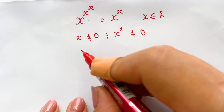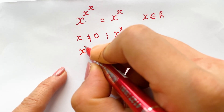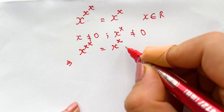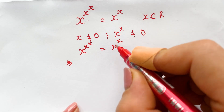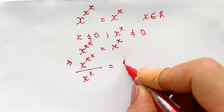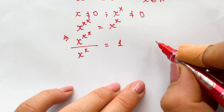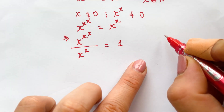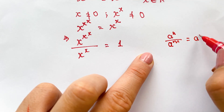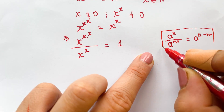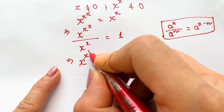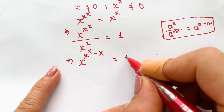So you can write x^(x^x) = x^x, and then divide both sides by x^x, since x^x ≠ 0. This gives x^(x^x) / x^x = 1. Applying the exponential property a^n / a^m = a^(n-m), the equation becomes x^(x^x - x) = 1.